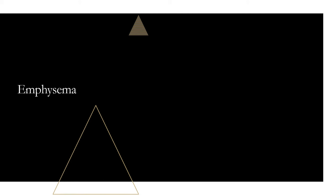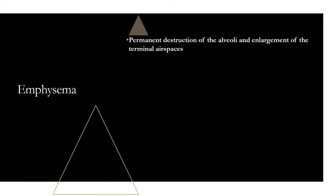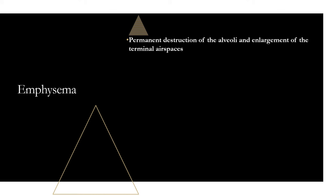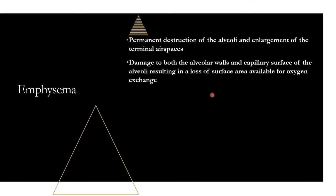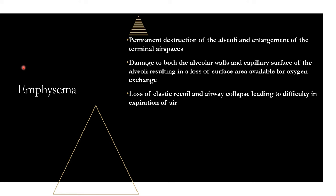Let's get started with emphysema. When we're talking about pathophysiology, it's all about the alveoli. It's a permanent destruction of the alveoli, which leads to enlargement of terminal air spaces. The damage is on the alveolar walls and capillary surface, resulting in a loss of surface area available for oxygen exchange. In emphysema, the alveoli basically pop and you have this wide open space — you lose all the walls for oxygen absorption, causing a diffusing problem. This also leads to a loss of elastic recoil and airway collapse.